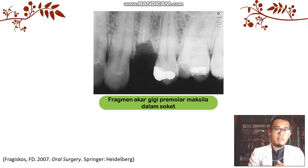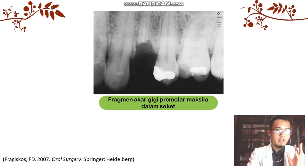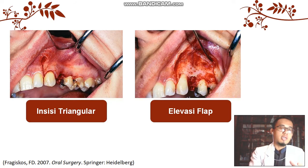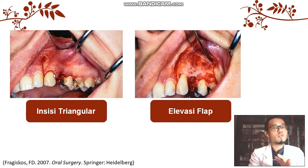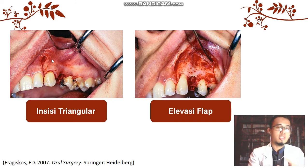Studi kasus: fragmen akar gigi yang terpendam dalam soket yang cukup dalam, di mana kita melakukan metode terbuka untuk pengambilan fragmen akar. Pertama kita melakukan flap dengan desain yang adekuat — flap dengan desain L-shape atau bentuk triangular. Kita melakukan insisi terlebih dahulu: insisi crevicular sebagai insisi horizontal pada bagian sulcus dari gigi sebelah mesialnya sampai ke premolar kedua. Kemudian perlu insisi vertikal yang oblique agar memenuhi syarat flap, yakni dasar flap harus lebih lebar daripada ujung bebasnya untuk kepentingan vaskularisasi.